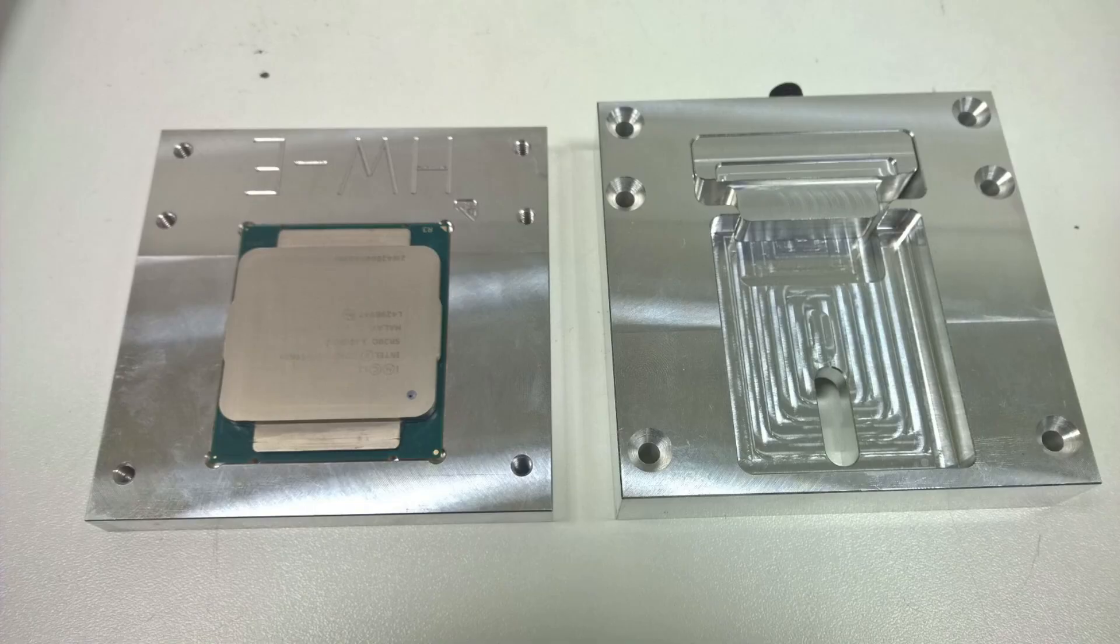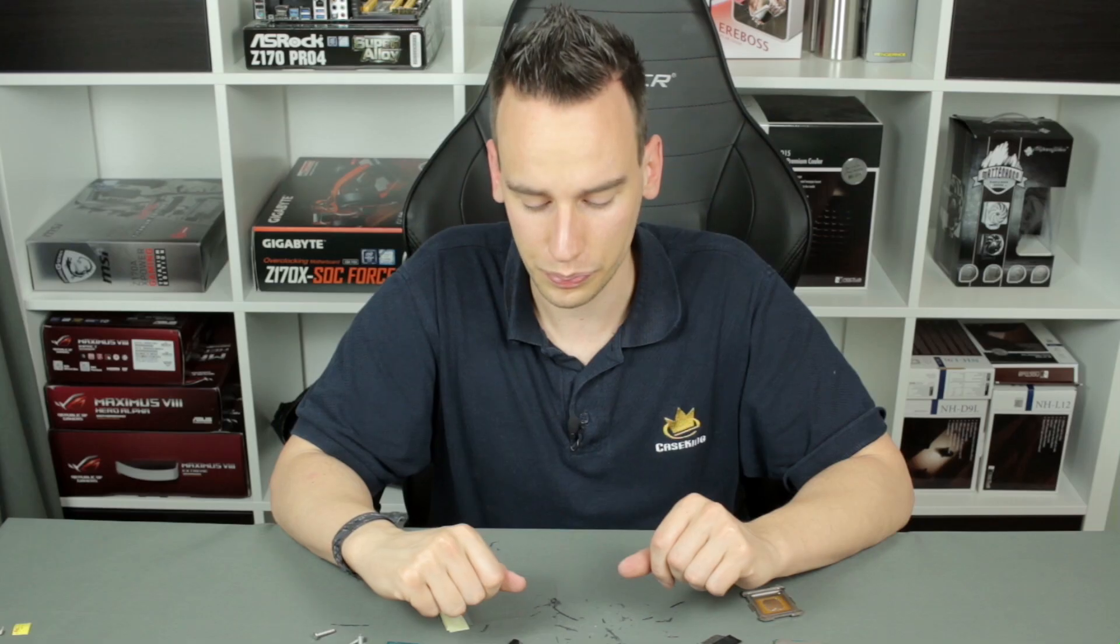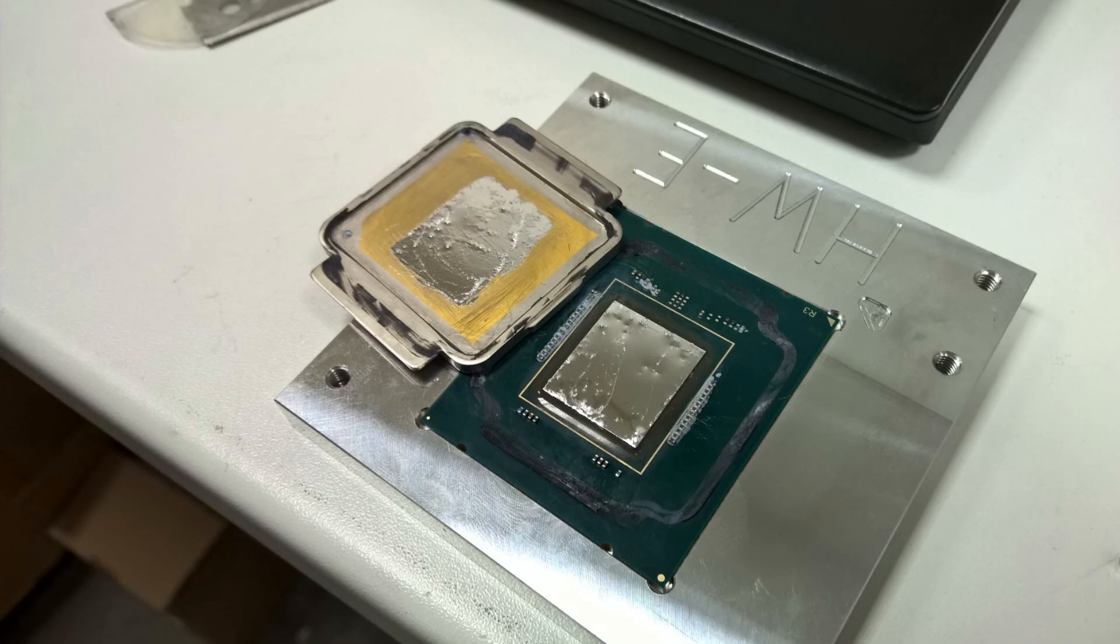So let's take a look at this one first. Here's a picture of the Haswell-E CPU sitting inside the Delidimate Extreme, and now you can see a picture after delidding. You can see the heat spreader on the left with an indium solder preform on it, and on the right the CPU. Afterwards, I removed the indium solder with a sharp knife and replaced it with liquid metal, which you can see on this picture.